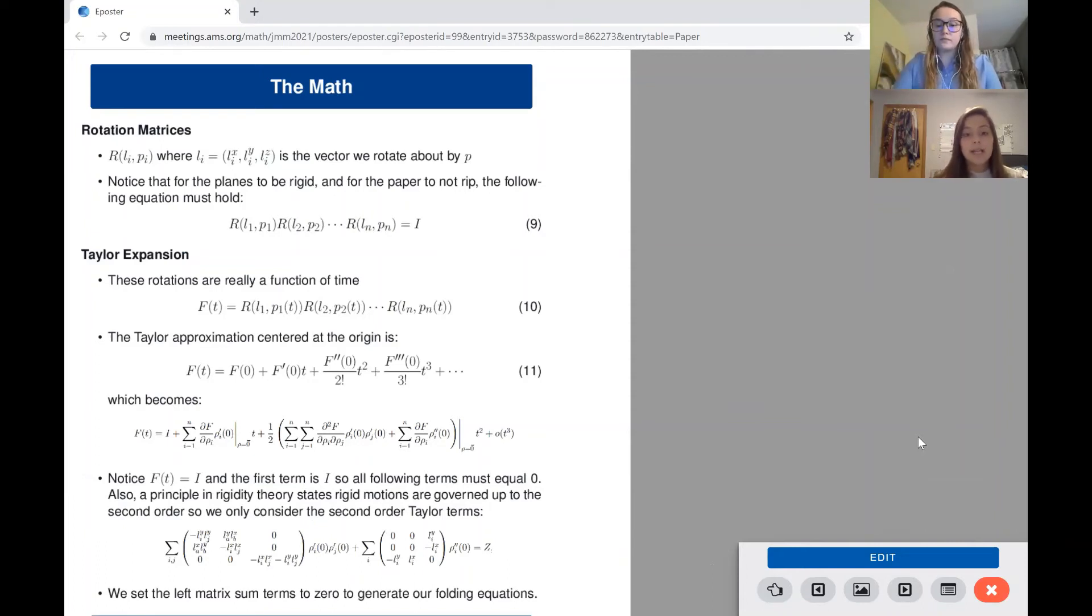If we let our crease lines correspond to vectors from the origin, we can use Rodriguez's formula to create a function in terms of l sub i, our rotation matrix, about the axis, and p sub i, our folding angle. We let bracket l sub i x denote the cross product matrix operator, where l sub i is the vector, and the superscript refers to the x, y, or z coordinate.